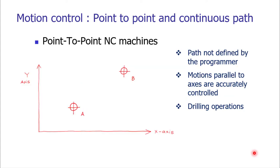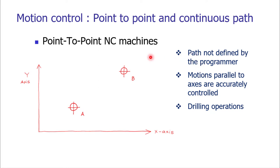In point-to-point NC machines, only locations are specified. For example, in a drilling operation, drilling is required at point A and point B. The programmer sets these locations through instructions in the program, which are converted into electrical signals by the MCU. The programmer does not define the path; the machine itself generates the path from A to B.